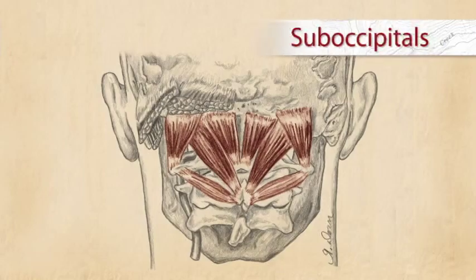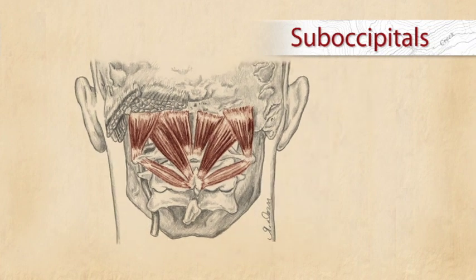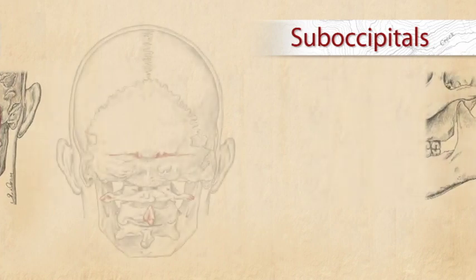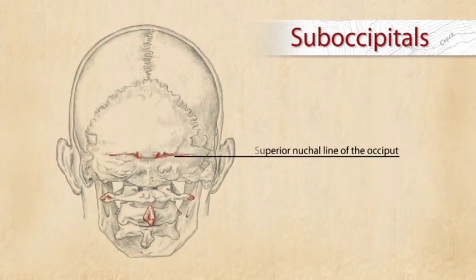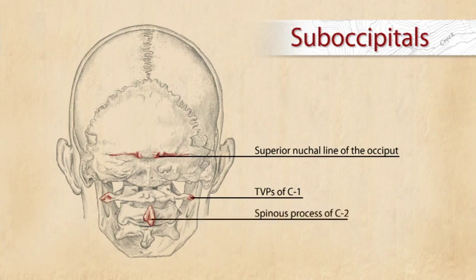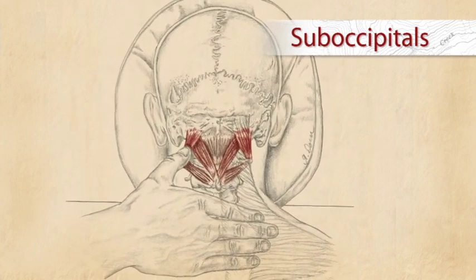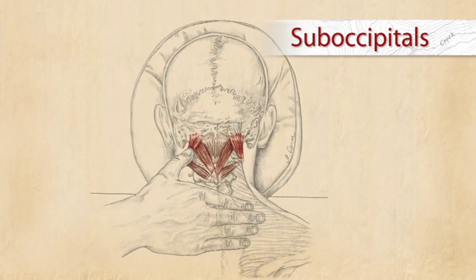The eight small suboccipitals are the deepest muscles of the upper posterior neck. To outline the suboccipital's location, find the superior nuchal line of the occiput, the transverse processes of C1, and the spinous process of C2. The upper fibers of the trapezius can also be used as a marker.